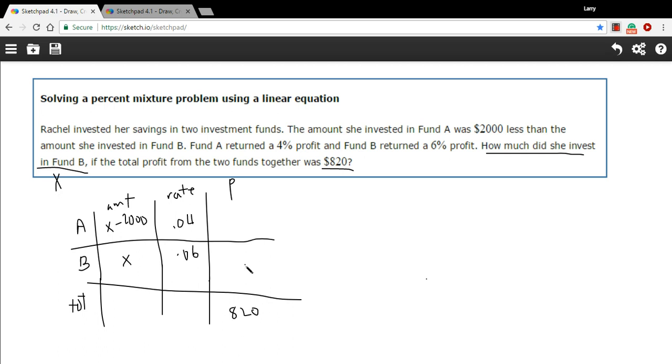Now I can fill in these two boxes pretty easily here, because the profit is just the amount you have invested times the rate. So this one is 0.04 times X minus 2,000. And this one is just 0.06 times X. And the profit from this one plus the profit from this one will add up to this.